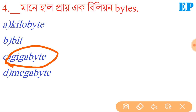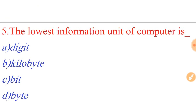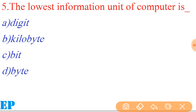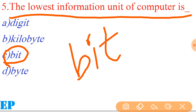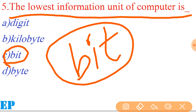Next question: the lowest information unit of a computer is what? The lowest information unit of a computer is a bit. A bit is the smallest unit of data in a computer. So the right answer is bit — option number B is the right answer. The lowest information unit of a computer is a bit.